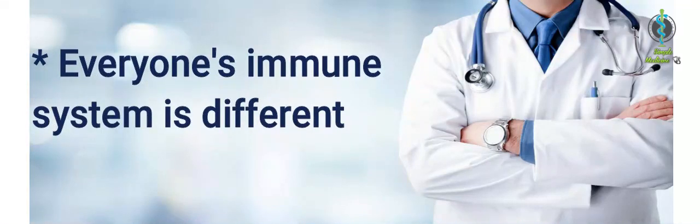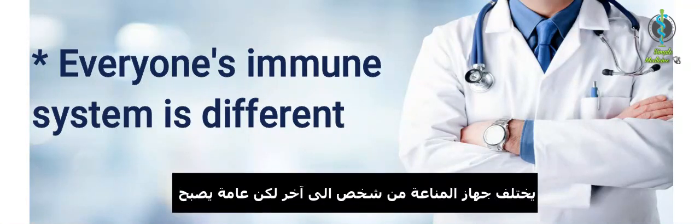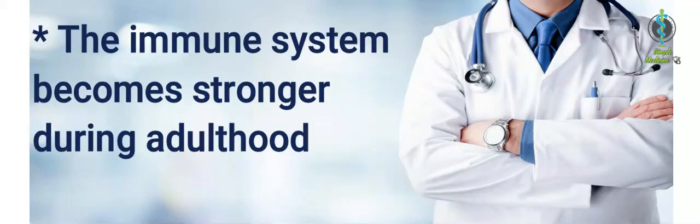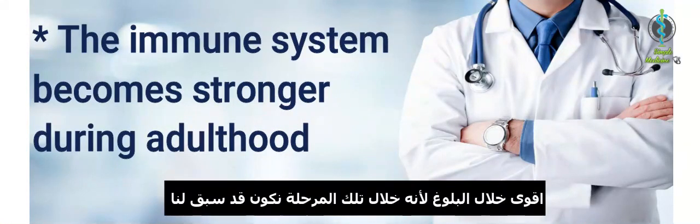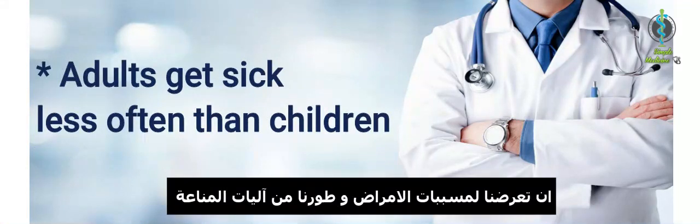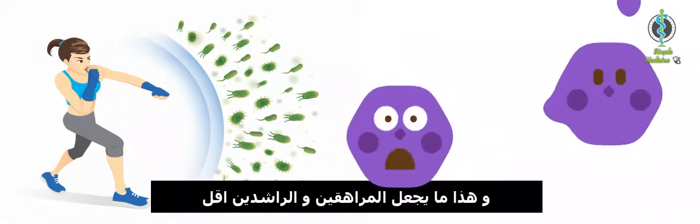Everyone's immune system is different, but as a general rule, it becomes stronger during adulthood. As by this time we have been exposed to more pathogens and developed more immunity. That is why adults tend to get sick less often than children.